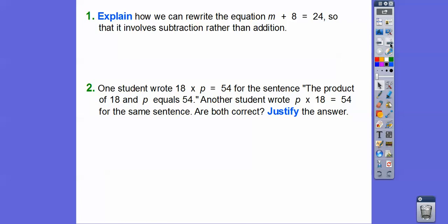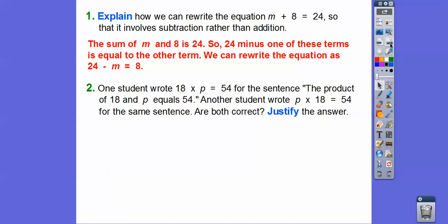All right, so explain how we can rewrite the equation M plus 8 equals 24 so that it involves subtraction rather than addition. The sum of M and 8 is 24. So 24 minus one of these is going to equal the other term right there. So we can rewrite that equation as 24 minus M equals 8, or we can say 24 minus 8 equals M.